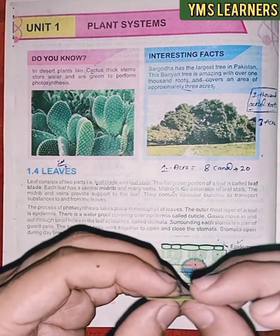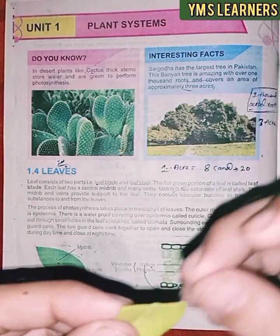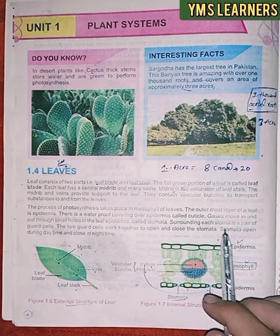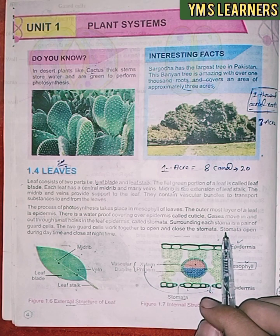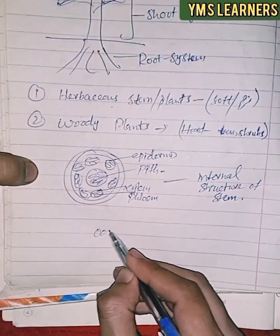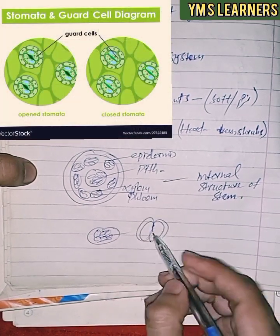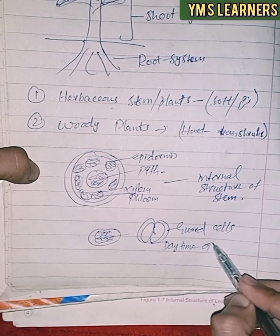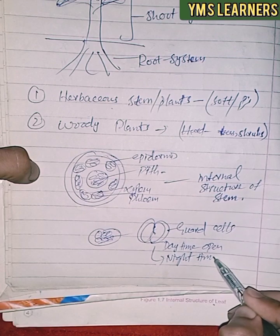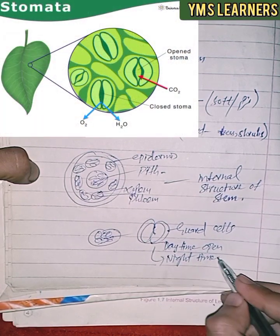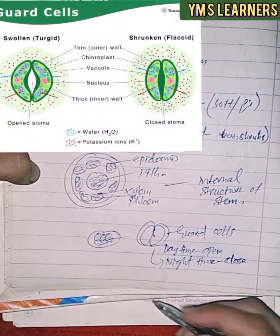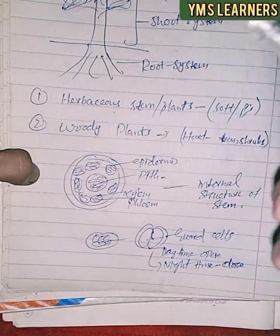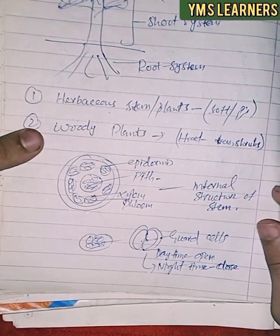This is the photosynthesis process, which produces glucose for the plant. The photosynthesis process involves the stomata and guard cells. The stomata open during daytime and close at nighttime. The guard cells control the opening and closing of the stomata. The leaf has an internal structure that supports all these functions.